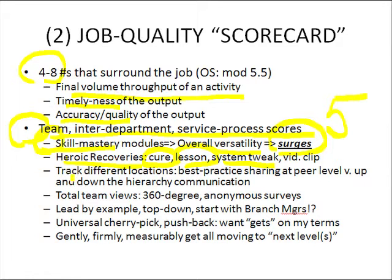If we track different locations and compare ten branches on these various numbers — whether traditional four-to-eight metrics or service-process-oriented ones — there will be people at the top and people at the bottom. Half of why they're at the top or bottom is pure luck, and half is skill. We have to sort that out to discern what are truly best insights, or at the bottom, unintentional oversights.